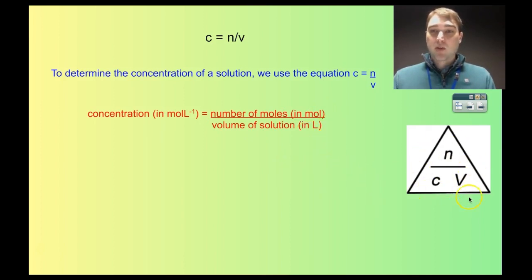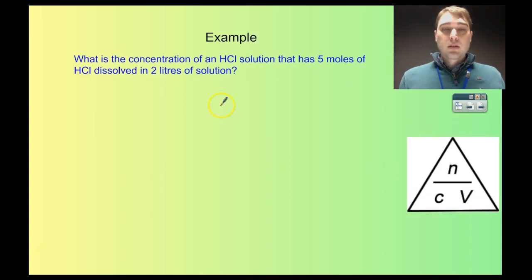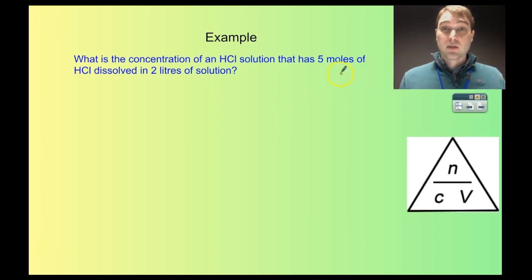You can also use this magical triangle here to rearrange the equation as needed. So let's look at an example question. What is the concentration of an HCl solution — hydrochloric acid solution — that has 5 moles of hydrochloric acid dissolved in 2 litres of solution?